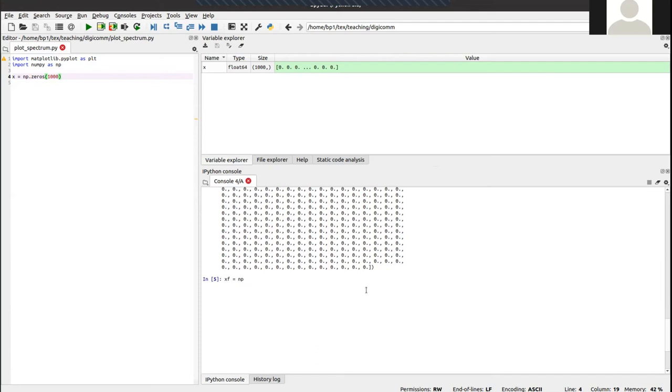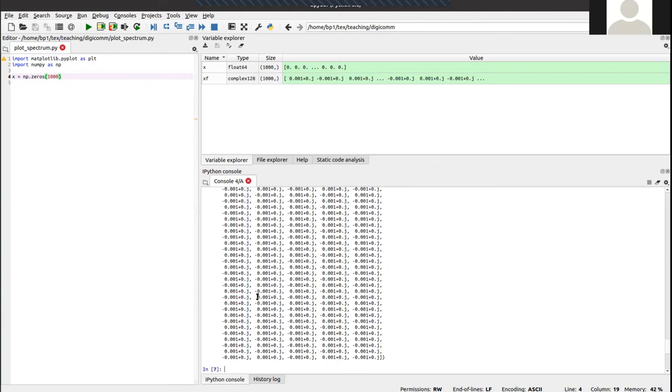So then there should be a one somewhere. Yeah, there's a lone one in the middle here. So if we now do the inverse Fourier transform and let's have a look here at the xf, we see that the samples next to each other, the real values are just flipping the sign here: positive, negative, positive, negative, and so on.